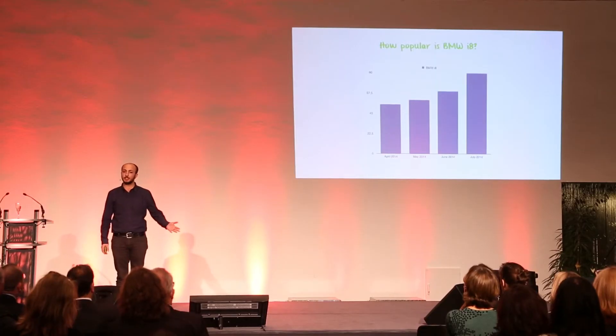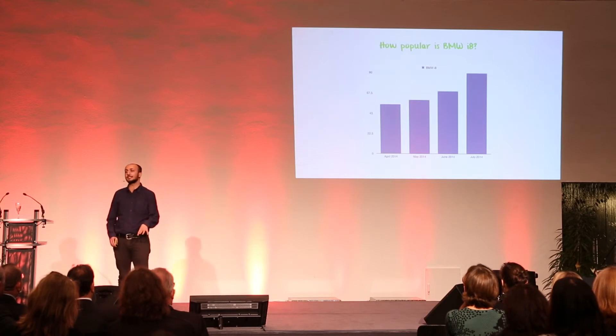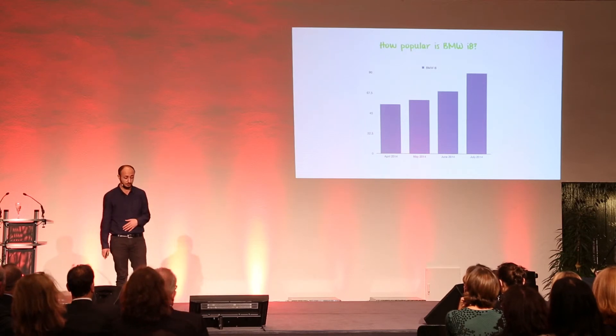No human is involved — apart from the programming part, which I did. After that, you can say, I want to know how popular is the BMW i8, and you would have a graph showing how much people talk about it and the shift over time — whether it got higher or lower. You can also compare two topics, for example Akku versus Ladestationen, and see which topic is more popular than the other.